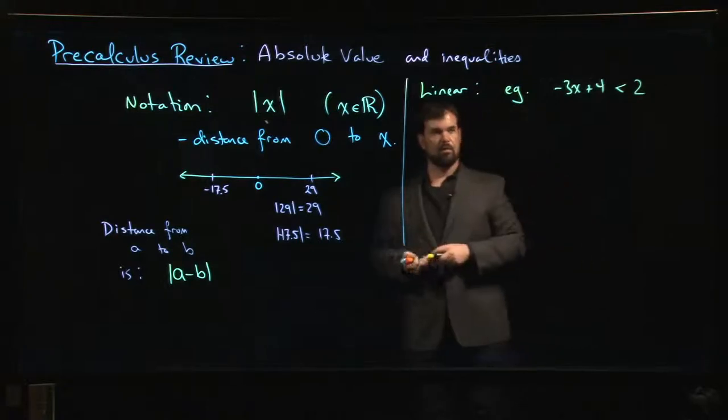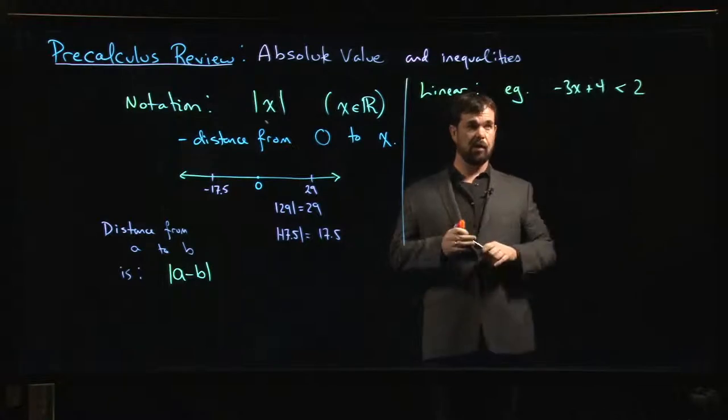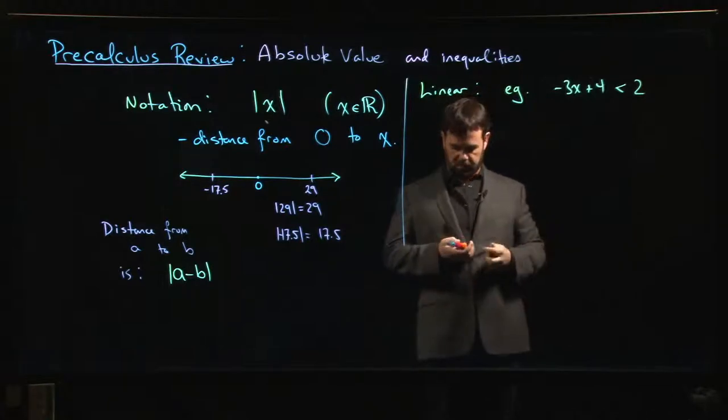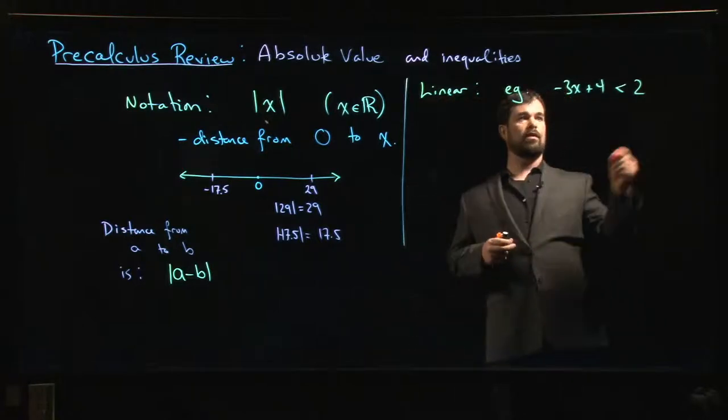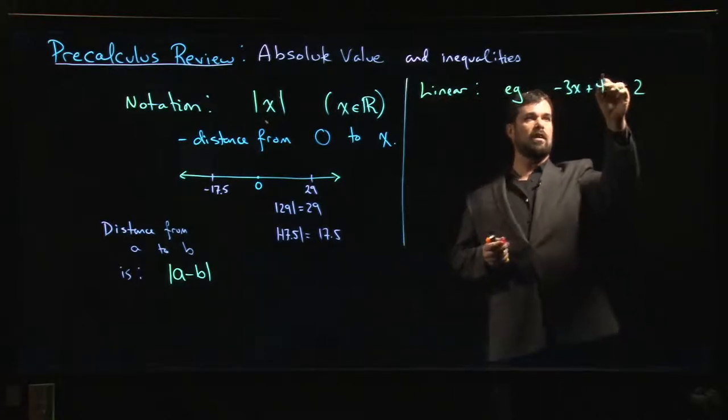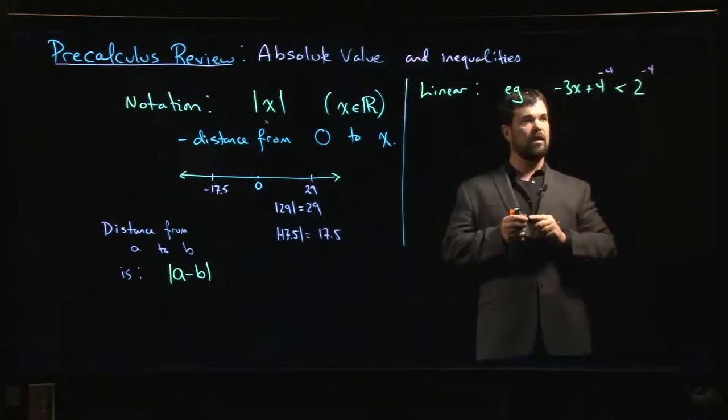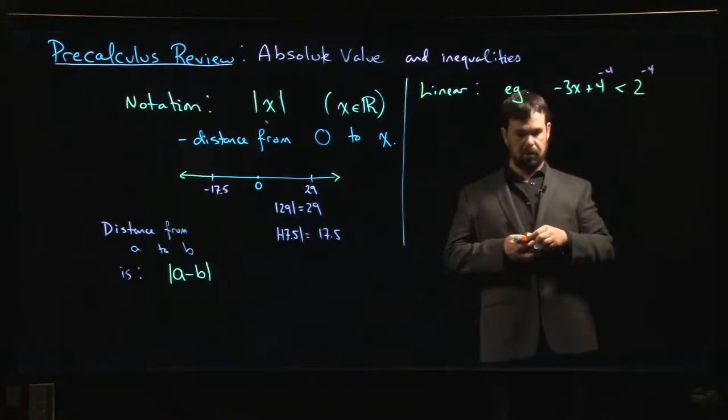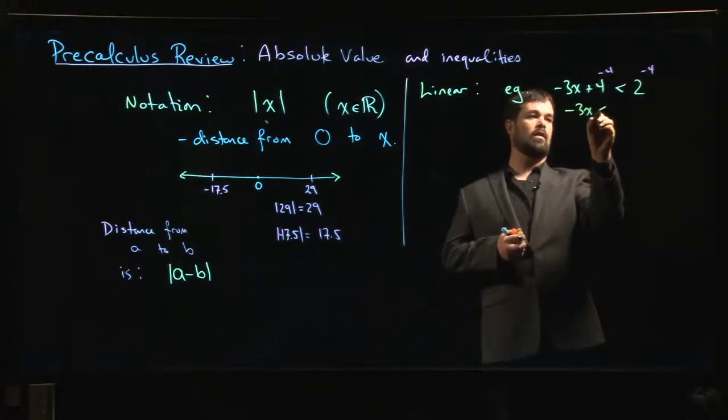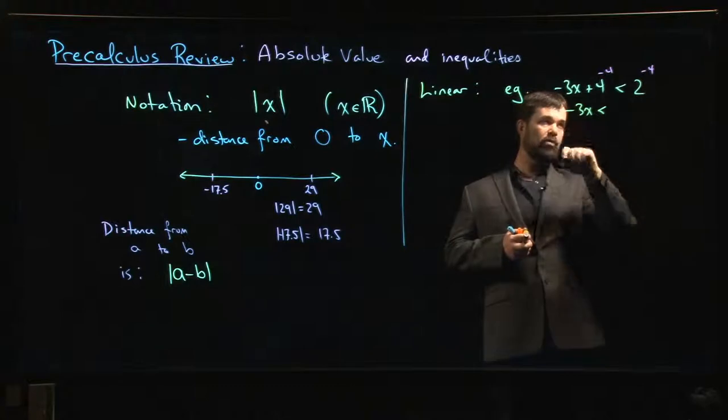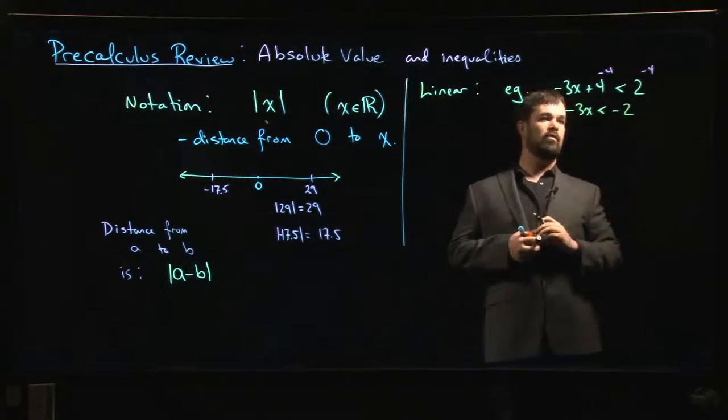So basic rules for inequalities say you can always add something to both sides of the inequality that doesn't affect things. The first thing that you might do here, it's nice to get all the numbers on one side. So you might decide, let's subtract 4, subtract 4 from both sides. 4 minus 4, they cancel out. Minus 3x is less than 2 subtract 4, minus 2.